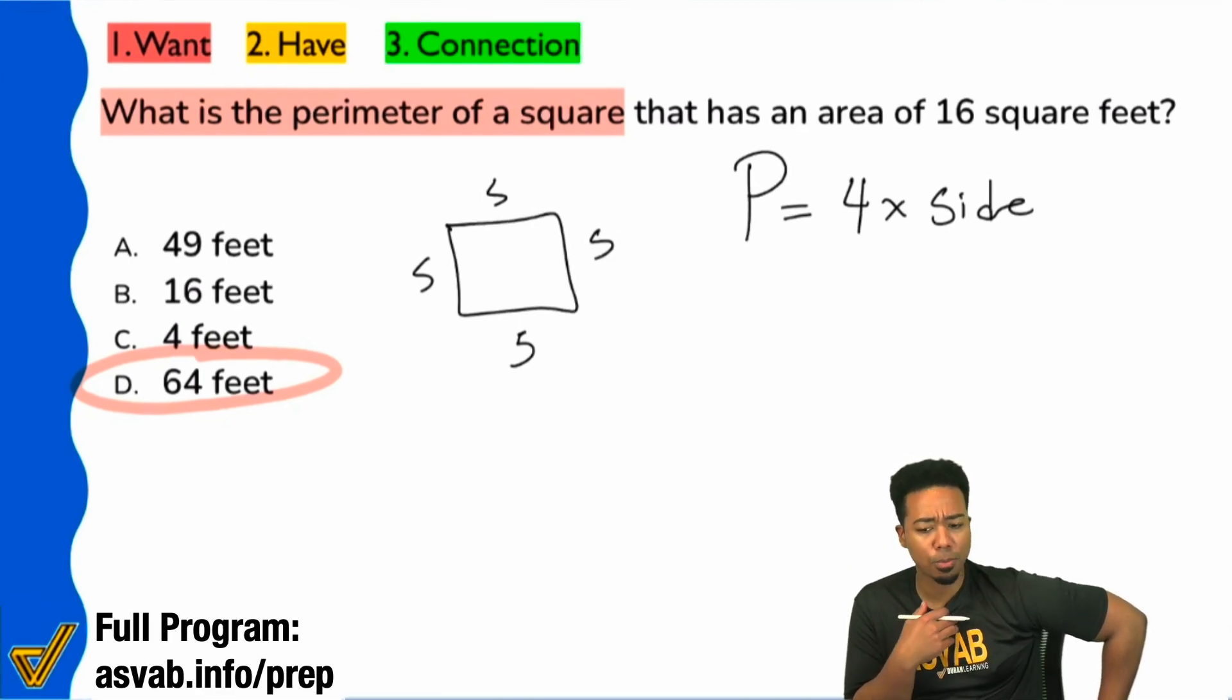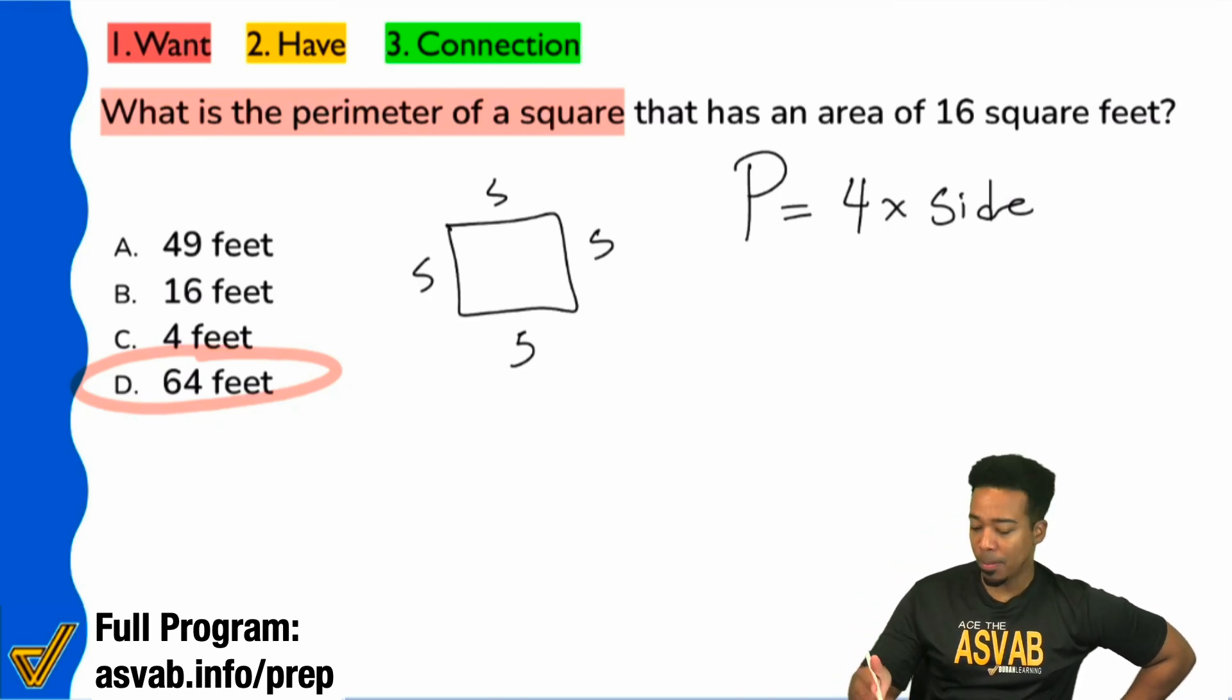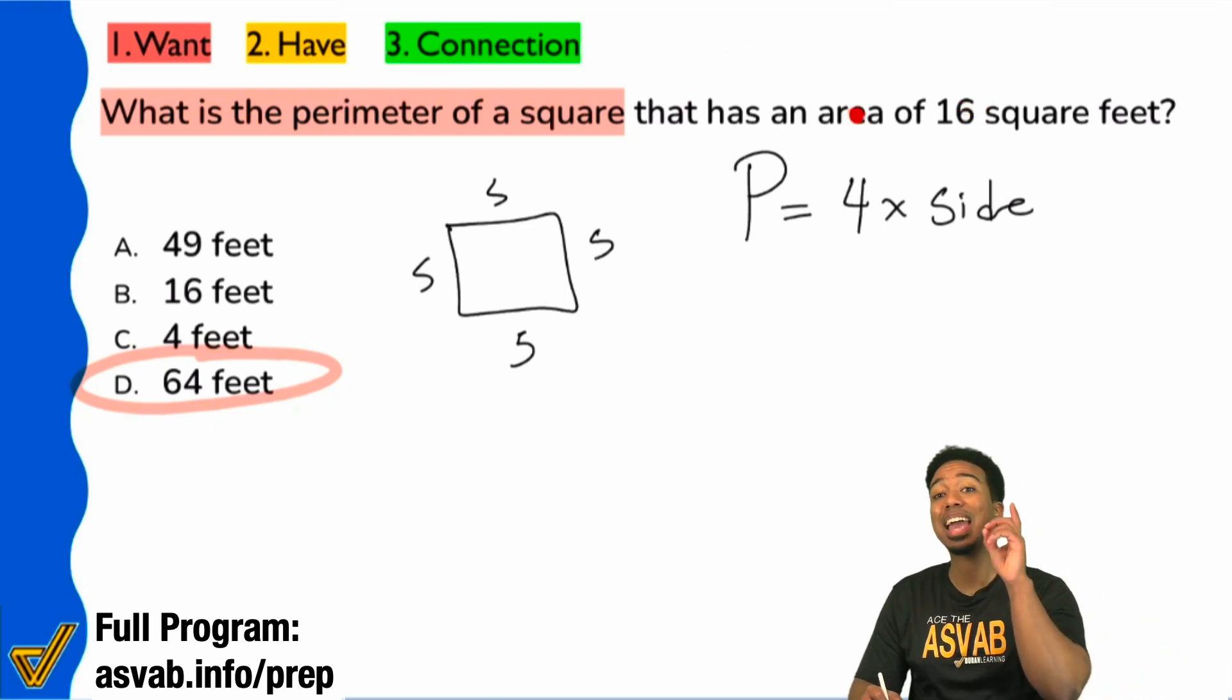Thanks for being honest, because I really do appreciate the honesty. And so, for those of you that did that, here's why that's wrong. Remember that the formula for the perimeter of a square takes the side length. This 16 is not the side length. It says that that is the area of the square, not the side length.